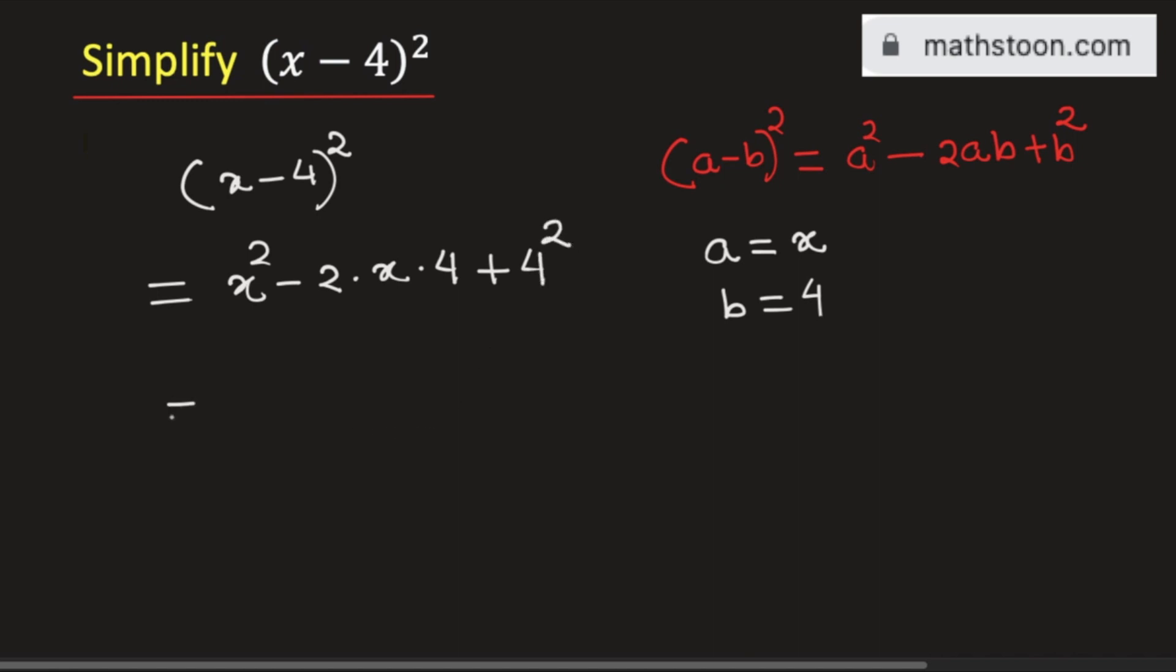Now simplifying it we will get x² minus 8x, as 2 times 4 is 8, and as 4² is equal to 16 we get plus 16.